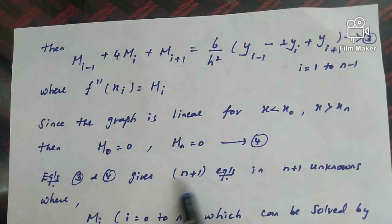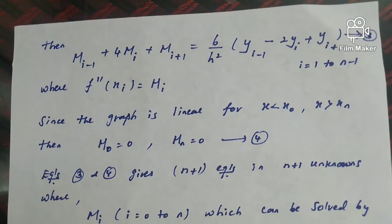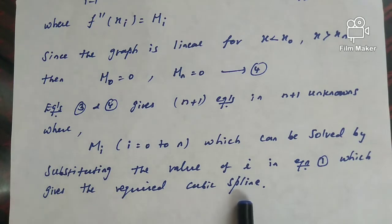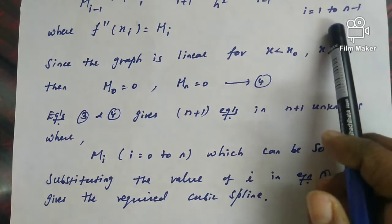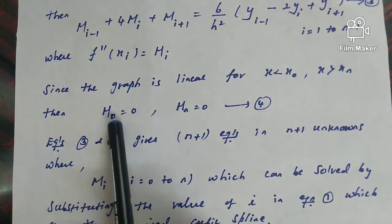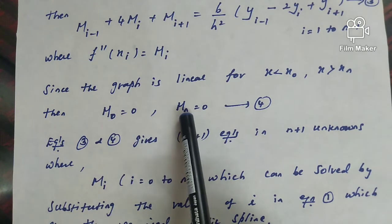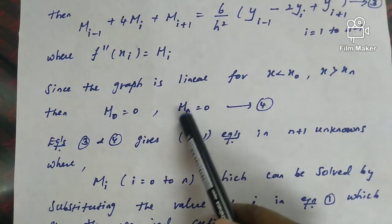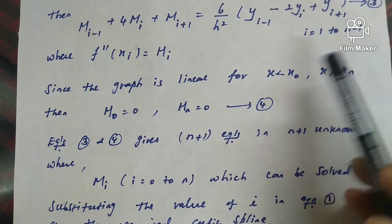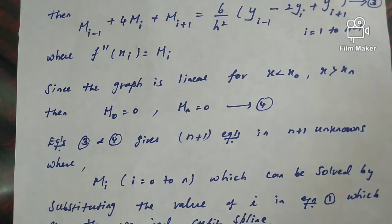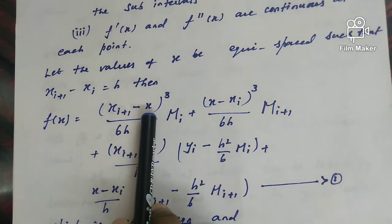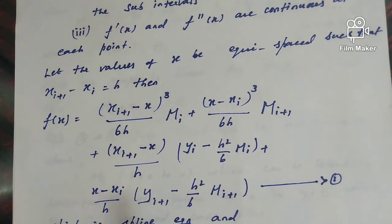Equations 3 and 4 together give n+1 equations in n+1 unknowns, where m_i for i = 0 to n. These are solved, and then the values are substituted back into equation 1 — the cubic spline equation — along with the interval values of x_{i+1}, x, and the m values, to obtain the required cubic spline.